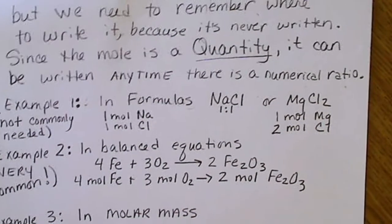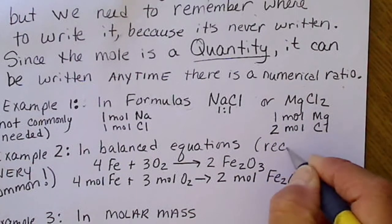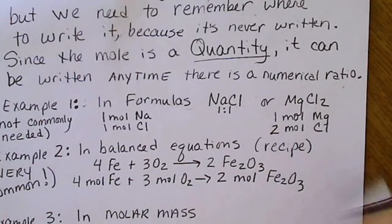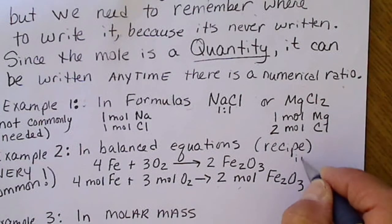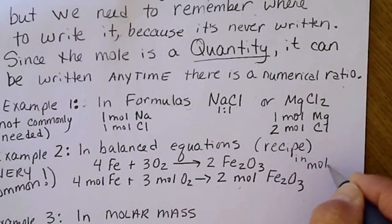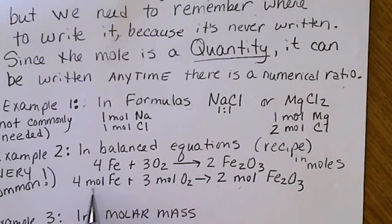So remember, the balanced equation ends up being like a recipe. So when we make something, or when we're looking at an equation as though we were going to prepare something, the recipe is always in moles. So we either need to remember that, or it's an even better idea to actually write that down.